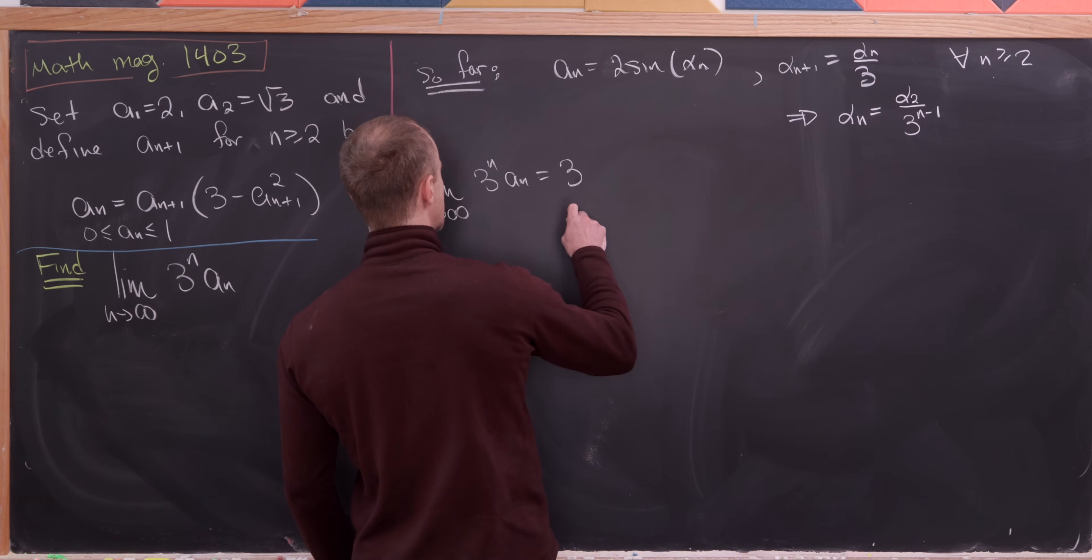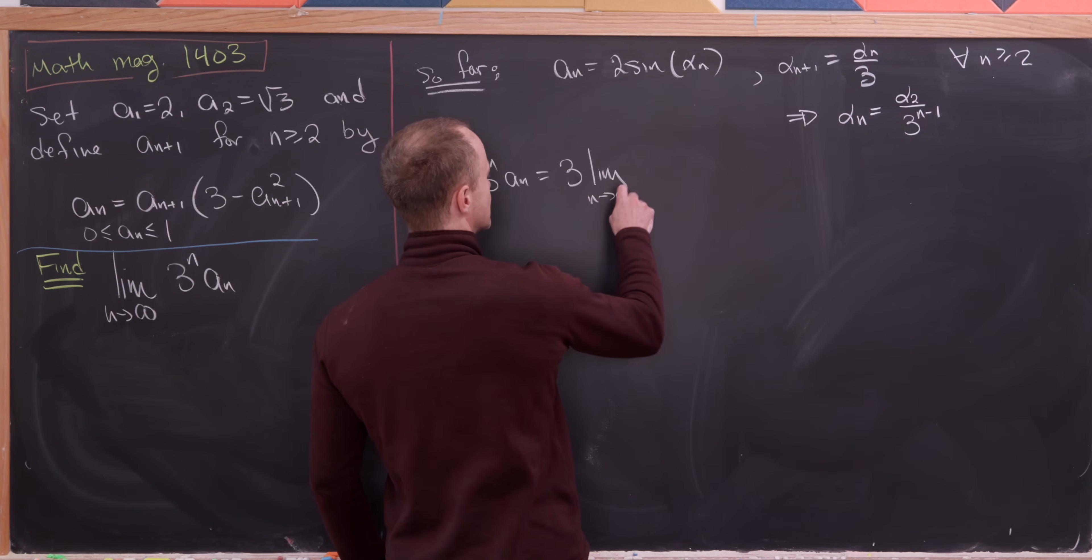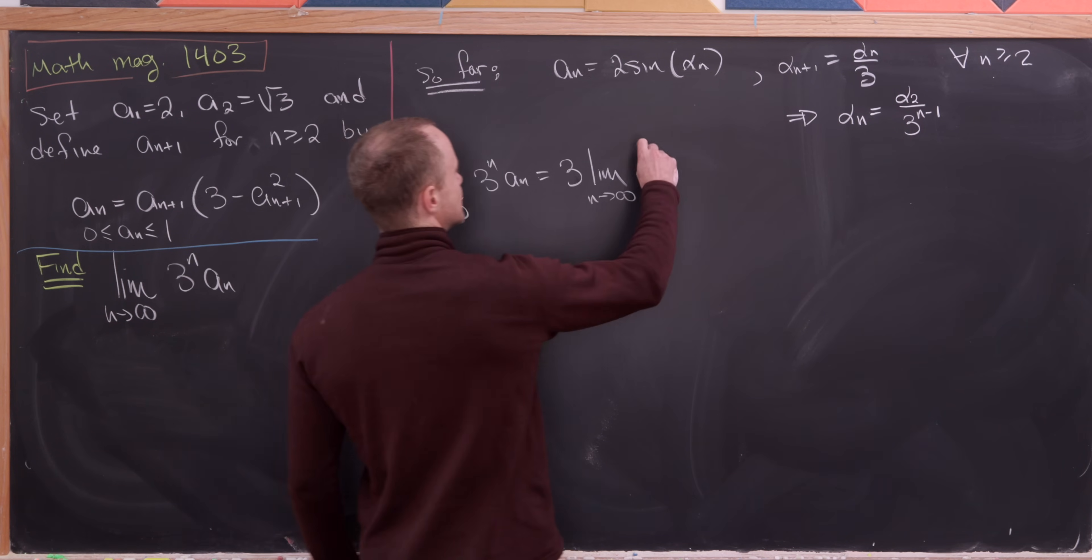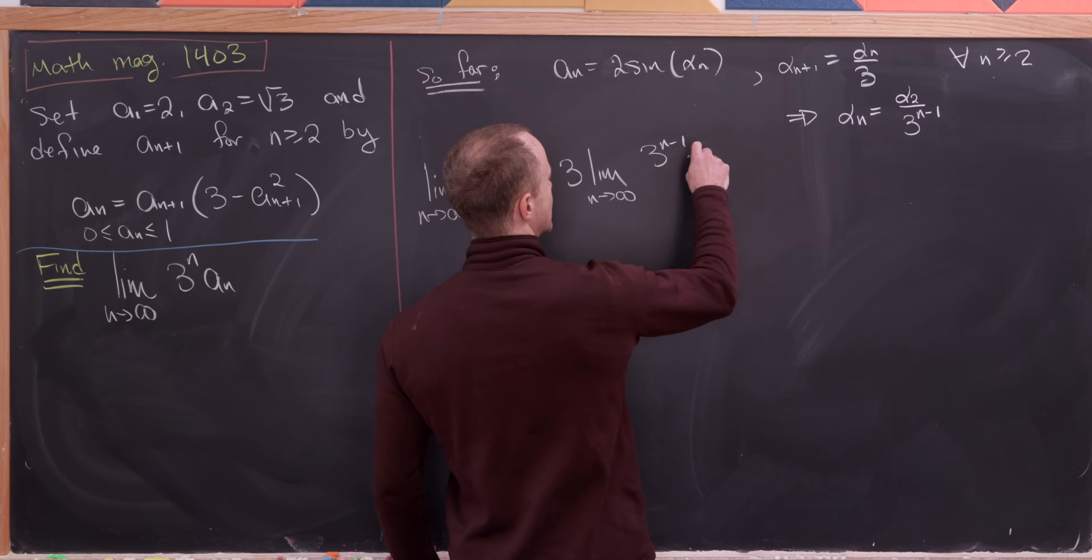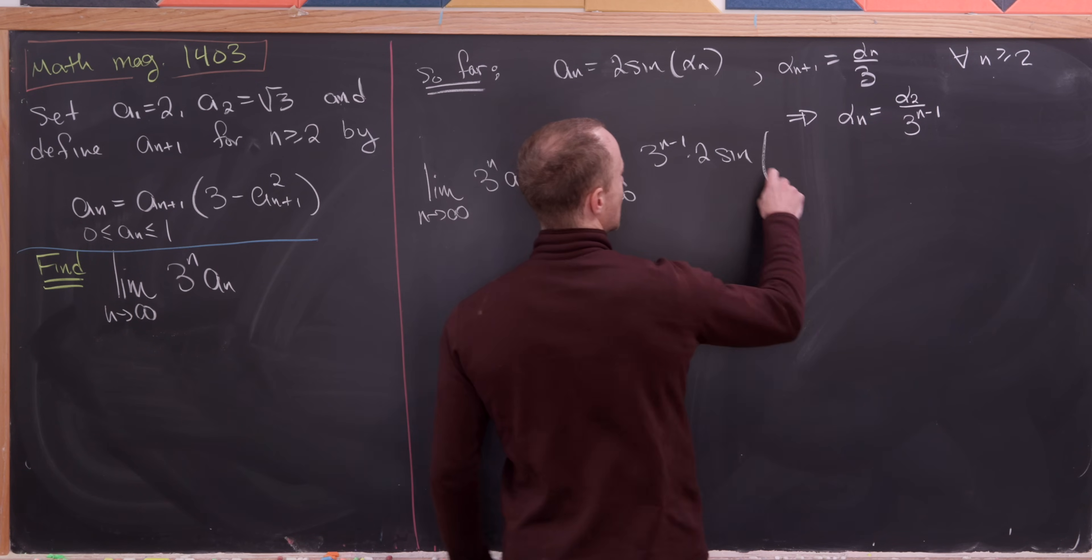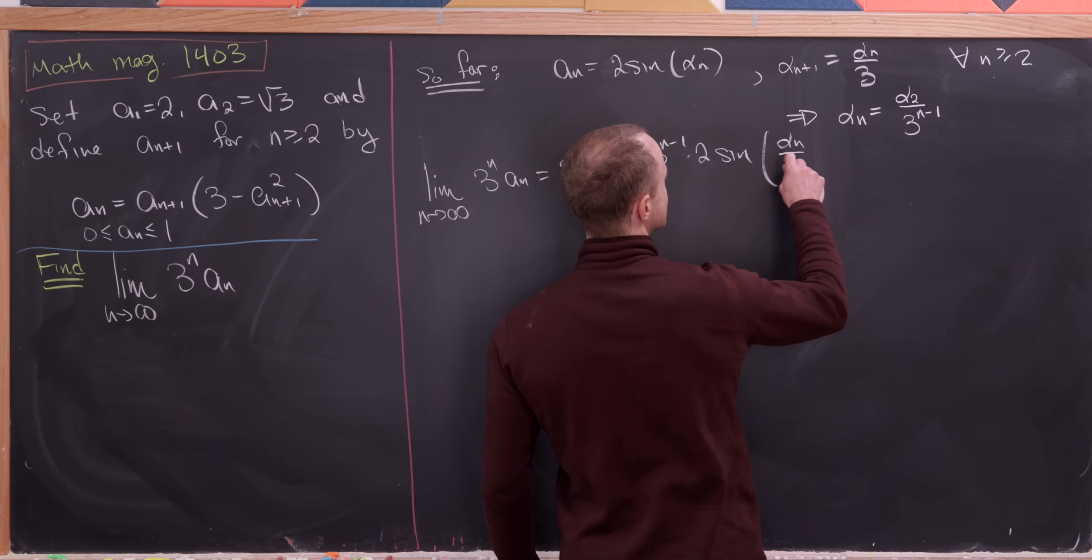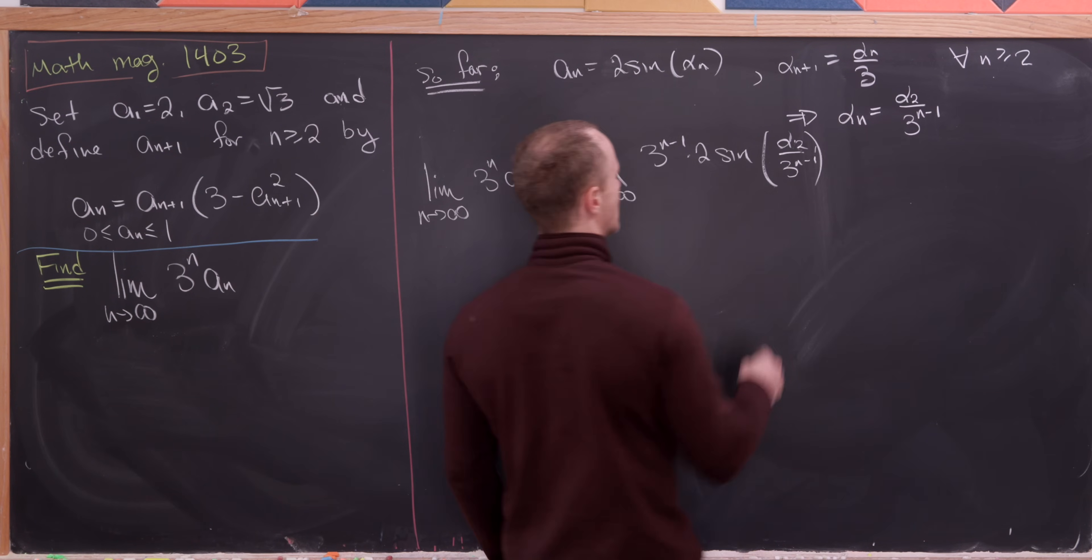well I'm going to take a 3 out and then we'll have the limit as n goes to infinity of, so it's going to be 3 to the n minus 1 times 2 times sine of alpha sub 2 over 3 to the n minus 1.